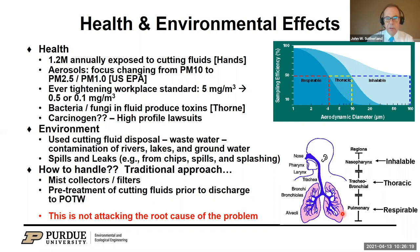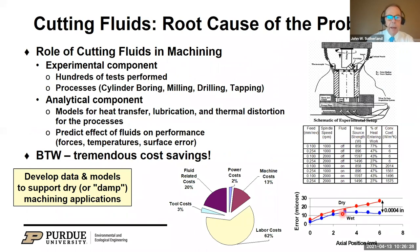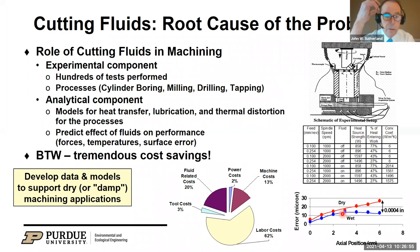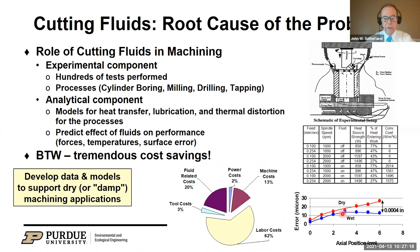Since I approached this problem from a manufacturing standpoint, I asked: why are we using cutting fluids in the first place? We began investigating that, running hundreds and hundreds of tests across all sorts of different processes — cylinder boring, milling, drilling, and so forth — and developed sophisticated mechanistic models to describe the role of cutting fluids in terms of heat transfer and lubrication, and how they affect the distortion of products, fixturing systems, and machine tools. We wanted to better mechanistically understand the role that cutting fluids play in terms of performance. We were able to develop the data and use the models to make a case to Ford that they could move away from high-volume flood cooling to dry or near-dry machining applications, essentially migrating to minimum quantity lubrication.